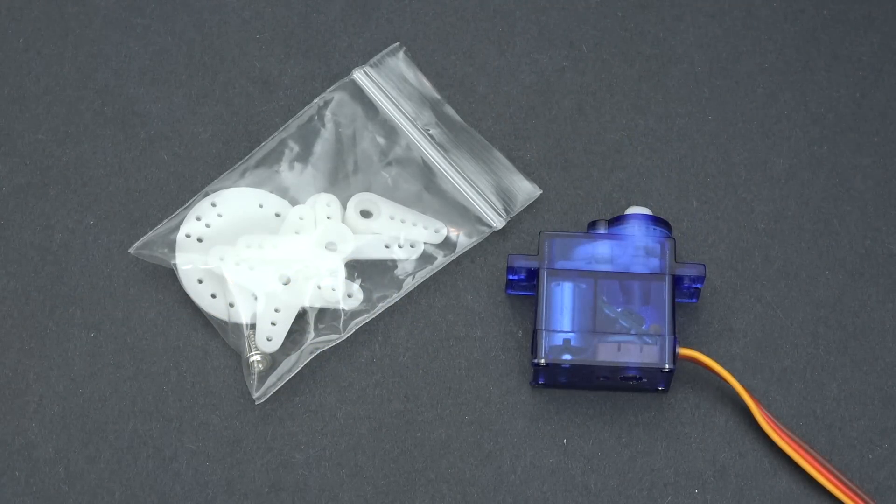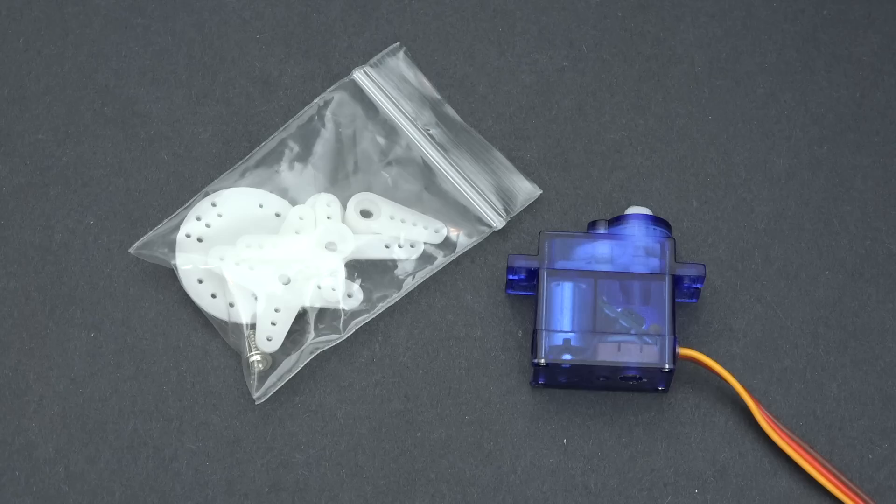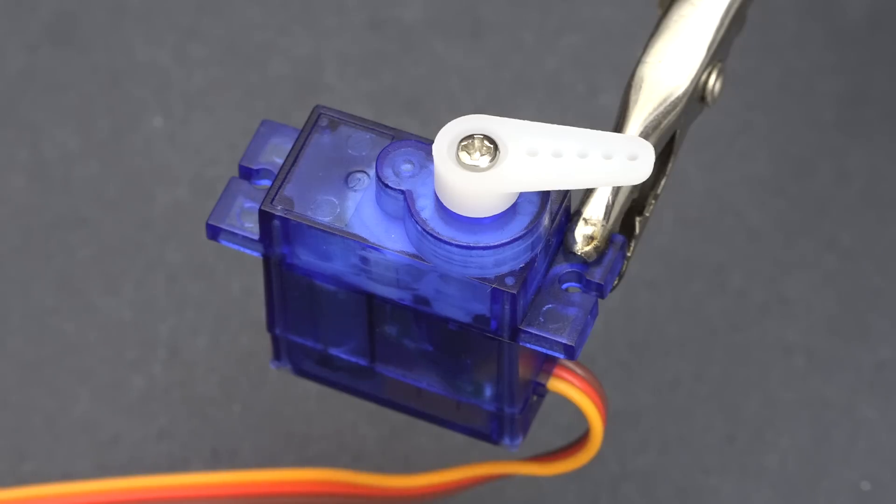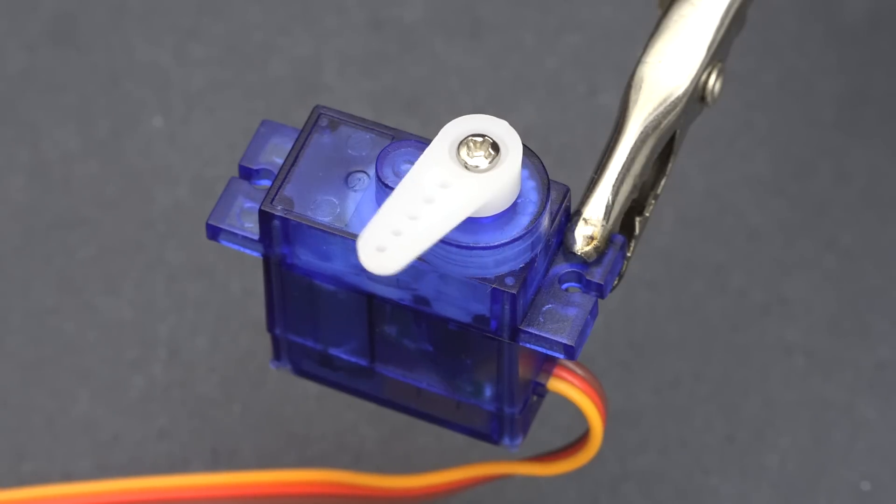Okay, so now you know what servos are and where to get one. Let's talk about how to use them. Every servo will come with a bag of extra parts. These things are called servo horns. The output shaft of a servo has these little teeth on them that grip the horn. Screw the horn onto the output shaft, and then you can wiggle the horn around.